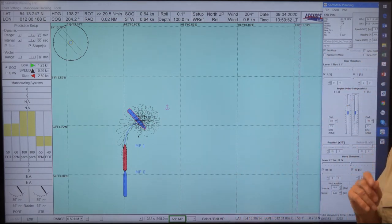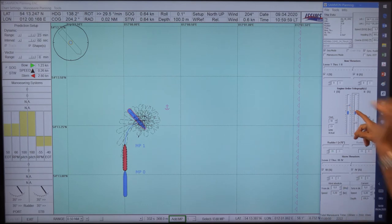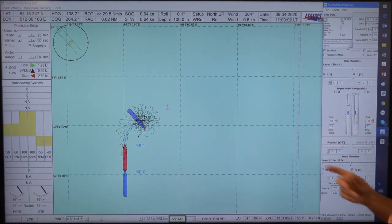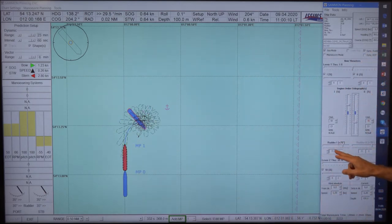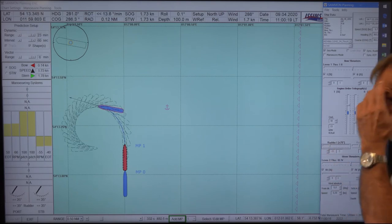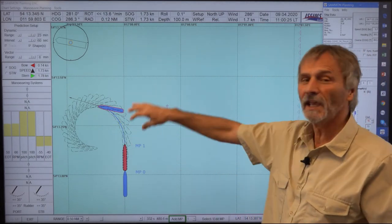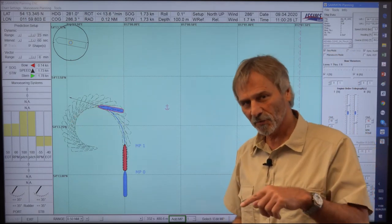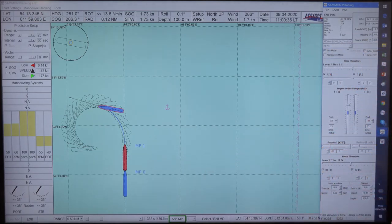But be aware that if you want to turn to starboard then the preference is to use the port engine ahead and the starboard engine astern, because if you want to apply that on a maneuver to the other side it might be totally different. So all the advantage you have gained on this side you lose to the other side. So be prepared that you use the benefits of the correct settings of engine and rudder. They should be related.